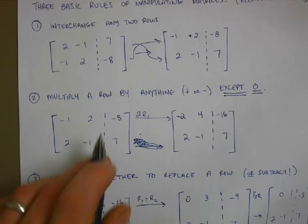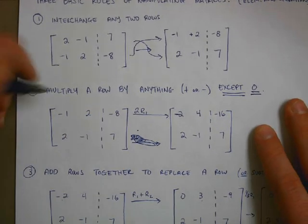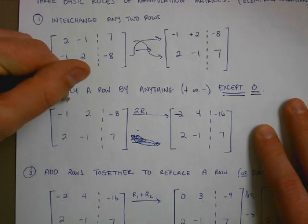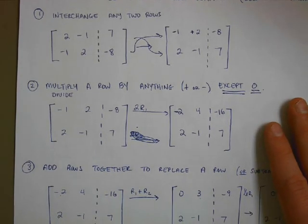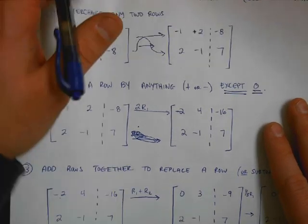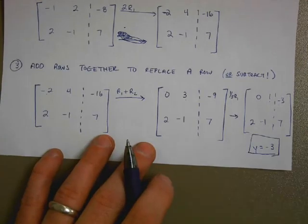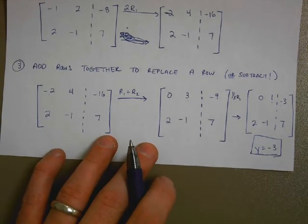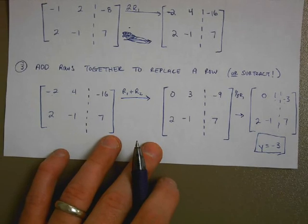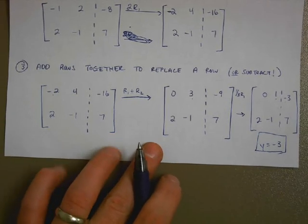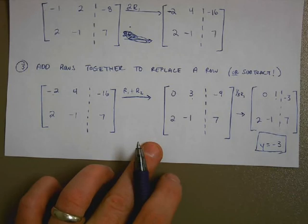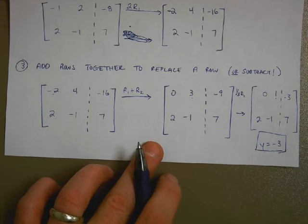I can multiply a row by any number, positive or negative. You know what, we might as well throw in divide there, too, because really we're doing the same thing. I can divide by anything except 0. Or I can always take two rows, add them together, and replace one of the original rows. Or I could subtract. And those are the basic rules of manipulating matrices. Now, what we're going to use this with next is Gaussian elimination. So if you're ready for that, you can go watch that video.